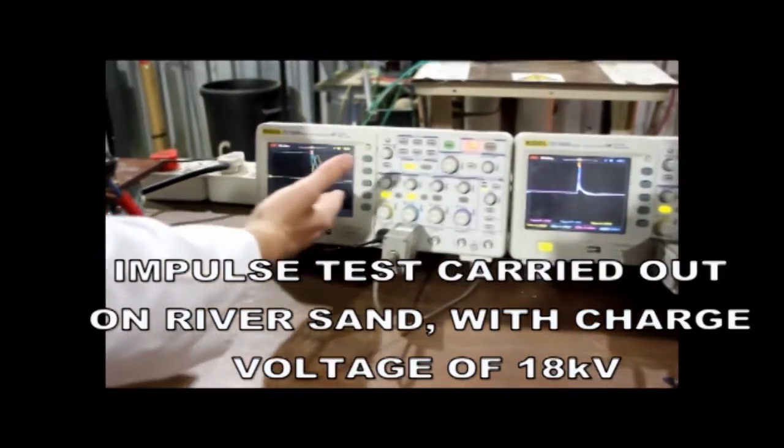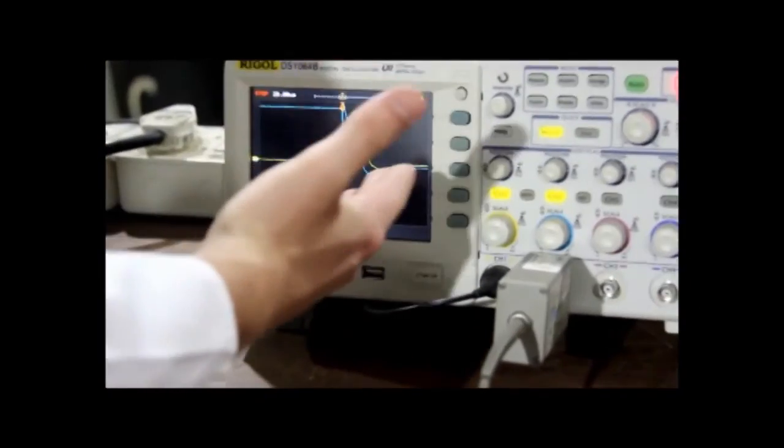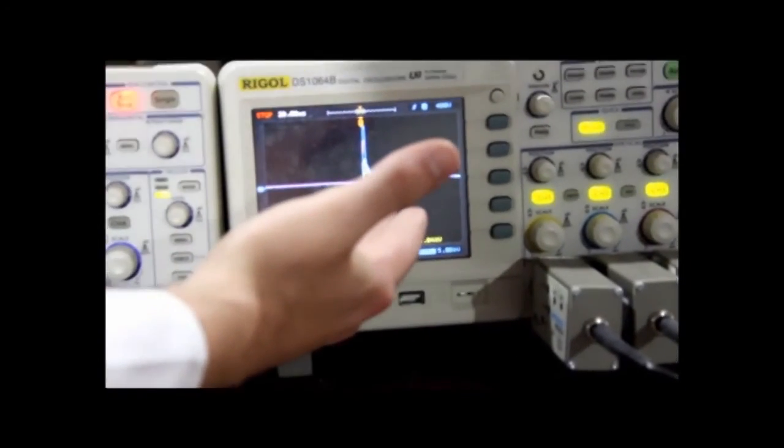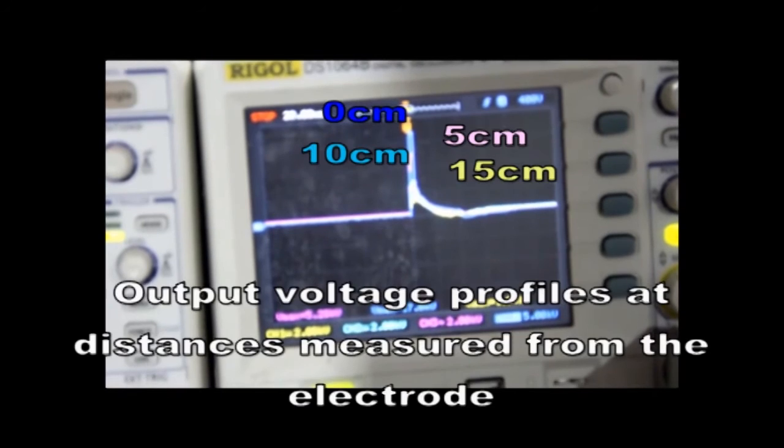Here, the blue line represents the charging voltage of the generator. The yellow line represents the current driven through the soil. And all these lines here represent the voltages measured at the various points within the soil.